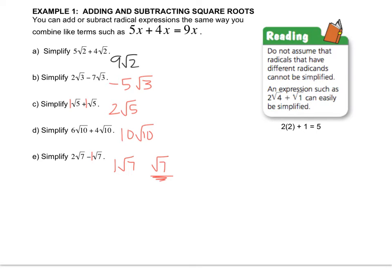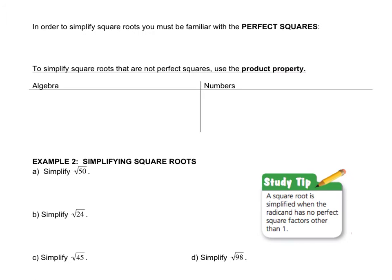In a moment we're going to talk about simplifying radicals. Sometimes you can simplify radicals and you can get rid of them. Don't assume that radicals with different radicands cannot be simplified. For example, 2 radical 4 plus radical 1 is 2 times 2 plus 1, because the square root of 4 is 2 and the square root of 1 is 1. You should always look to see if you can reduce them.